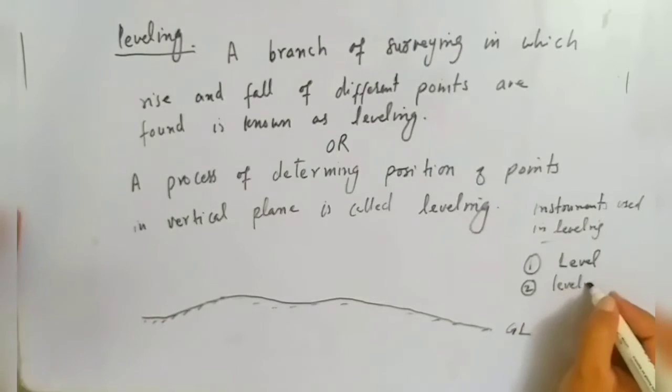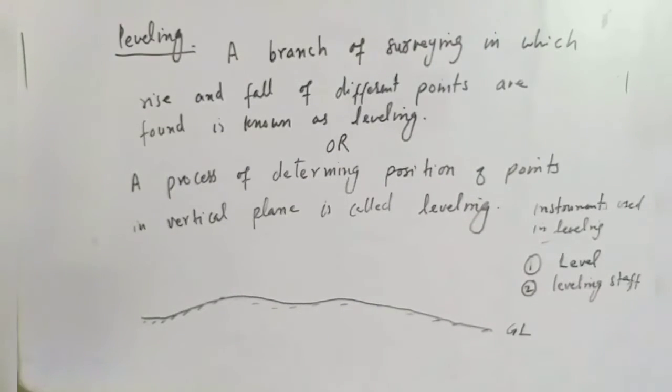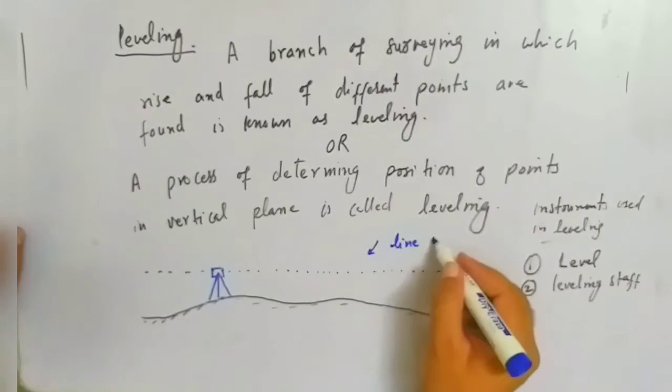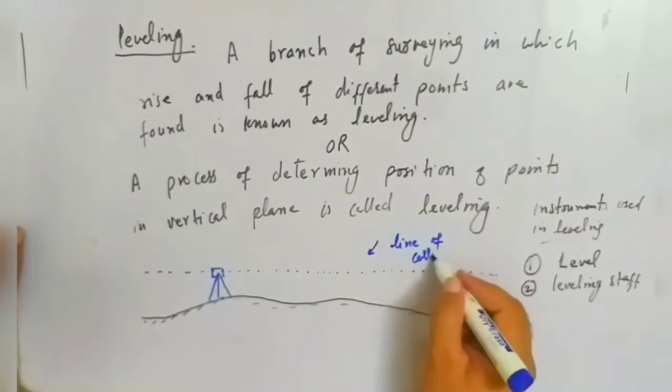Number two is the leveling staff. This line which is horizontal, this line is known as line of collimation. That is known as line of collimation.